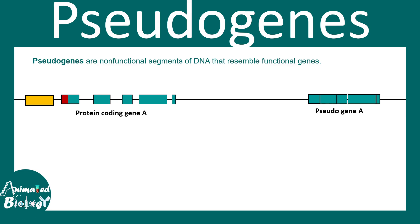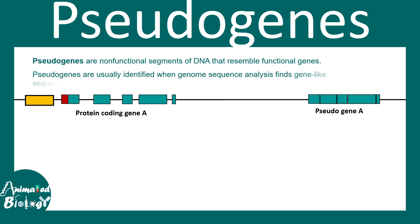In this video we'll talk about pseudogenes. Pseudogenes are non-functional segments of DNA that resemble functional genes. Here we have a protein coding gene A, and on the right hand side we have a pseudogene for protein coding gene A. The pseudogene has a lot of sequence similarities with the protein coding gene, however there are some differences. Pseudogenes are usually identified when genome sequence analysis finds gene-like sequences that lack regulatory elements. If you notice here, the pseudogene of gene A doesn't have the regulatory promoter element, so most likely it's a pseudogene.